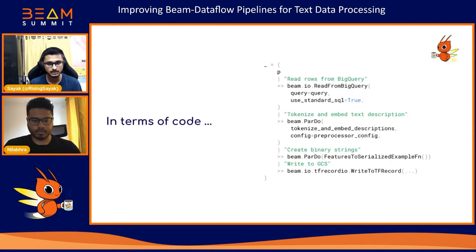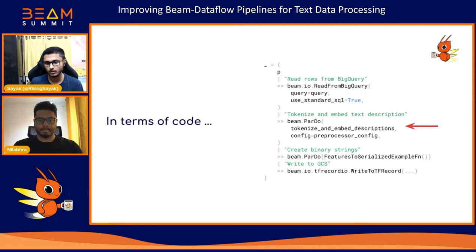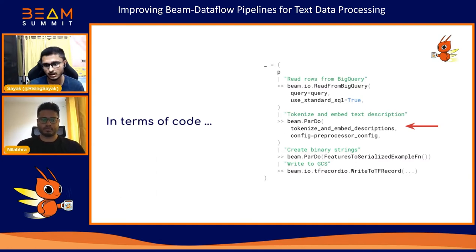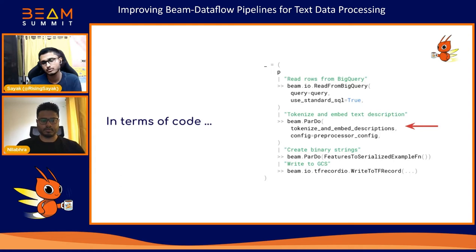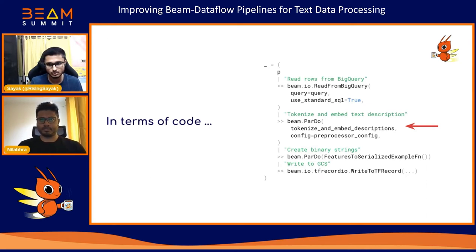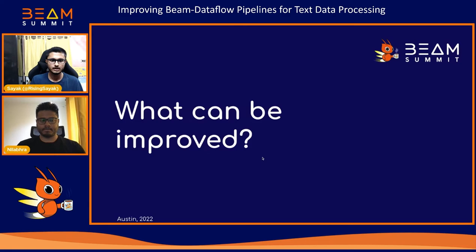Here's how the schematic of the Apache Beam pipeline looks using the Python APIs. One important detail to note is that we are fusing the tokenization and embedding generation utilities into a single step. Please take note of this because this detail will be very important as we proceed further in the session.